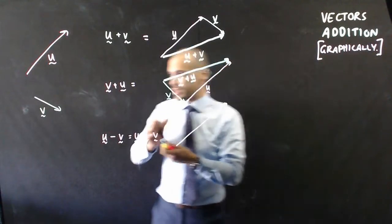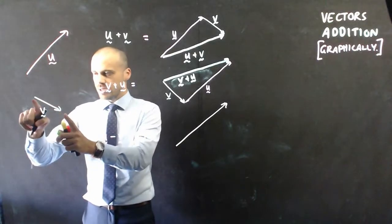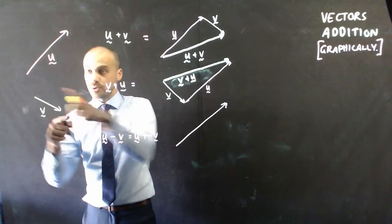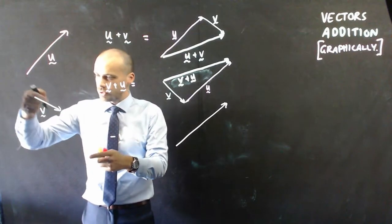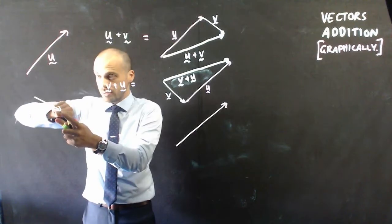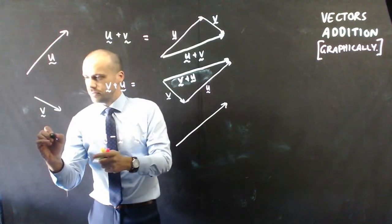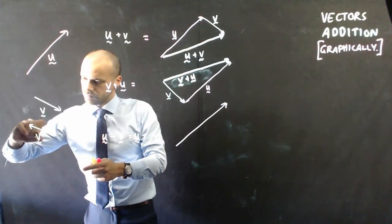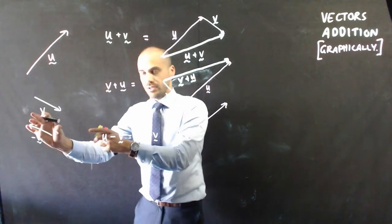Now, negative v. If this is v, negative v is just the other direction. If you were a bushwalker and you walked in this direction, you walked in a v vector, then to get home again, you have to go negative v. That's negative v like that.